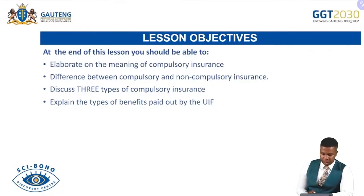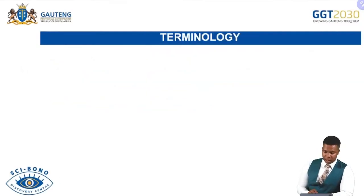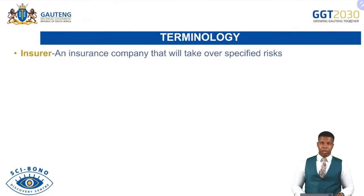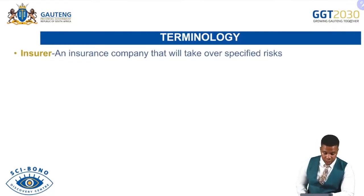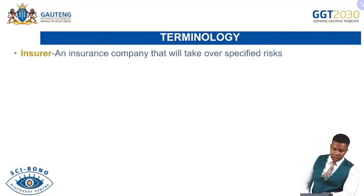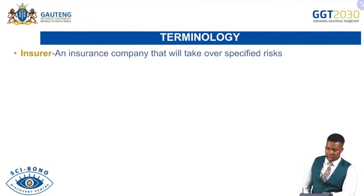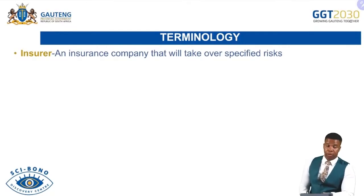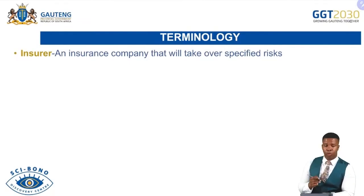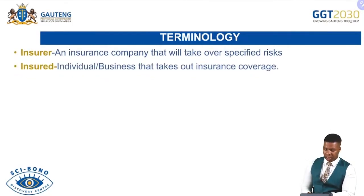We will also look into the types of benefits offered by the Unemployment Insurance Fund. Key terminology for this lesson: the term 'insurer' refers to an insurance company that takes over specified risks — for example, Budget, Sanlam, and First for Women. All those are insurance companies and they take over a specified risk.